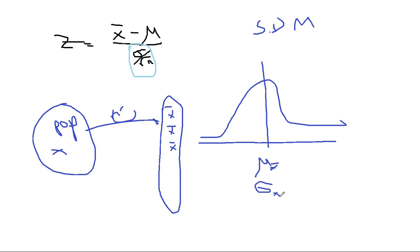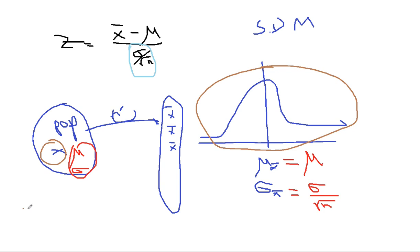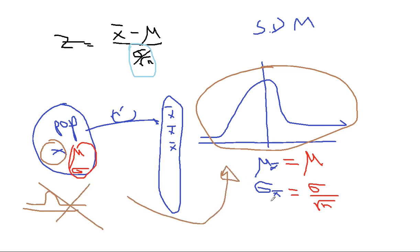The SDM will have a mean we call mu X-bar and a standard deviation sigma X-bar. It turns out that mu X-bar is actually equal to mu, and sigma X-bar is equal to sigma over the square root of n, where sigma is the population standard deviation. The distribution will be normal as long as X had a normal distribution. If X did not have a normal distribution, the sampling distribution of the mean will be normal as long as n is greater than or equal to 25 — this is the central limit theorem.